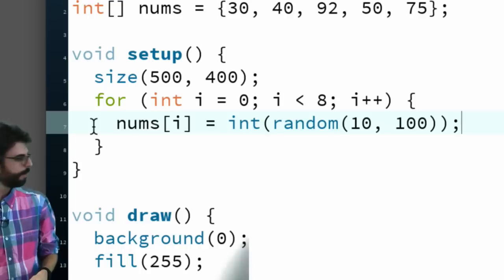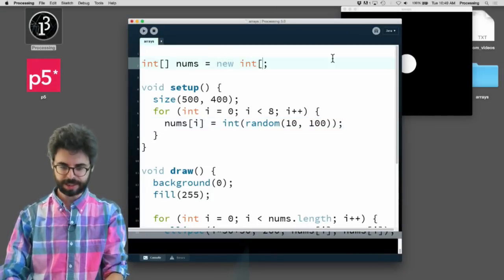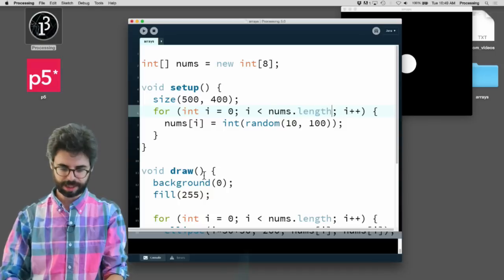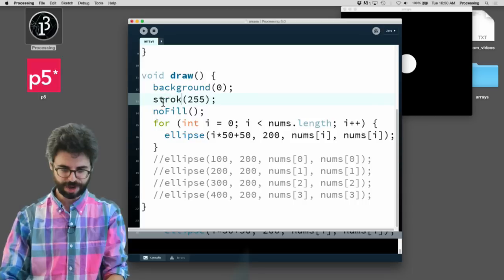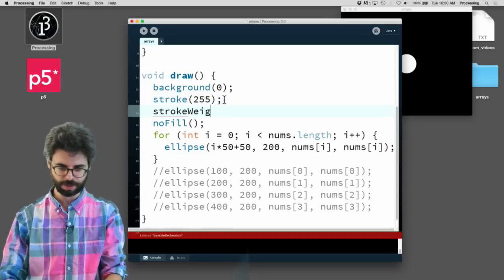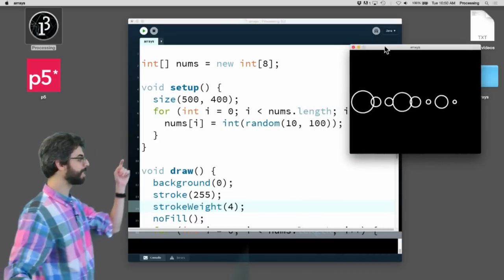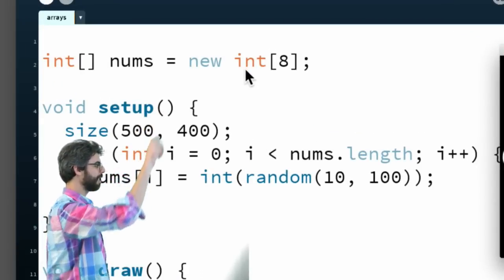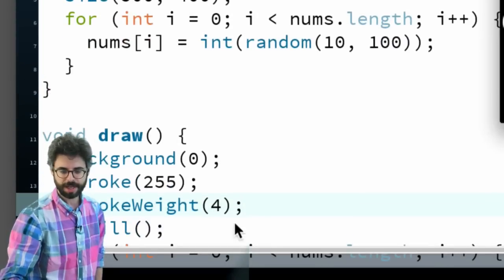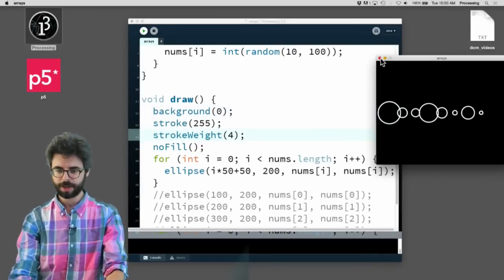I can change this top code to say new int 8, I want 8 spots. Let's clean up how we're drawing this. I'm going to say no fill and stroke 255, and let's make them thicker with stroke weight 4. You can see here, every time I run this sketch, I'm going to get a new result. Every time I'm going to create an array with 8 spots, fill that array with 8 random numbers, and then loop through that array and draw a circle using each element from the array. Run it again just to see. Look at those differently sized circles.